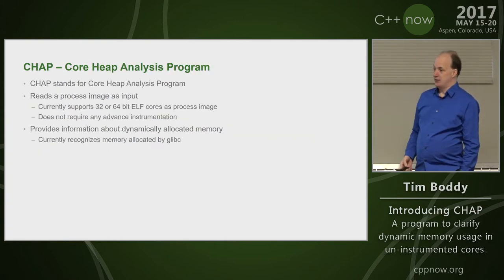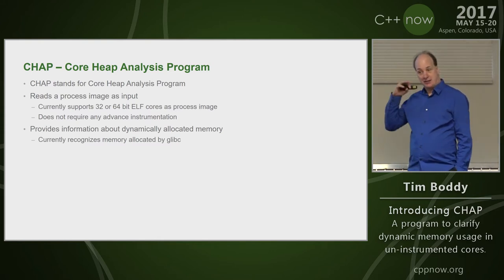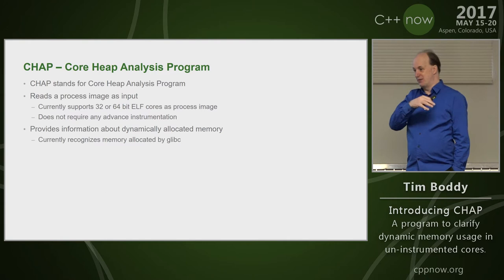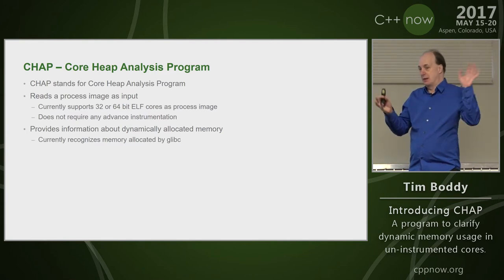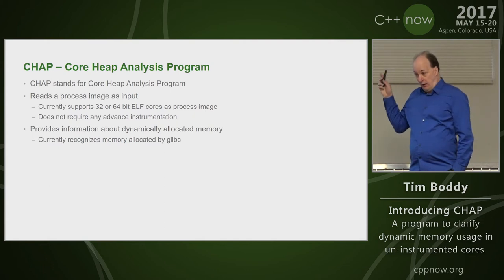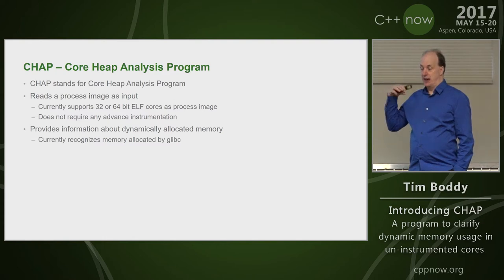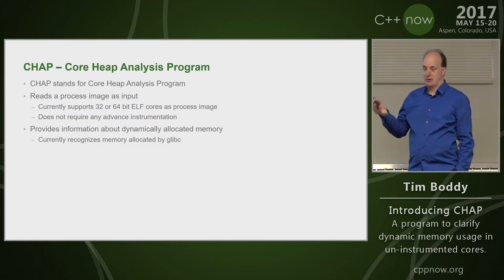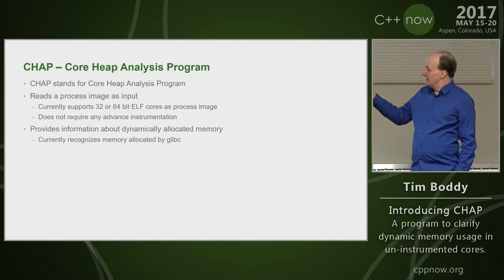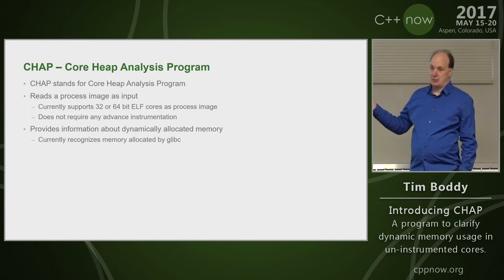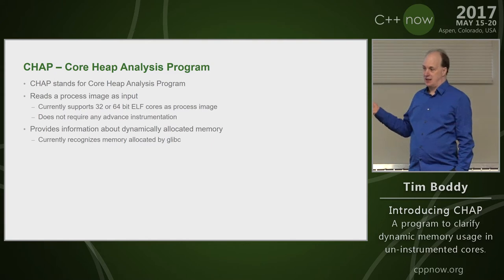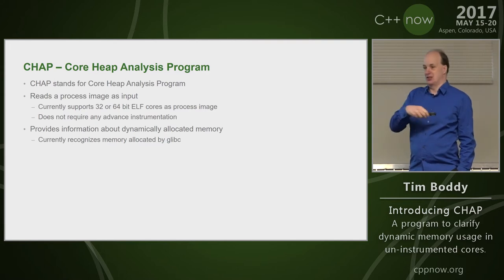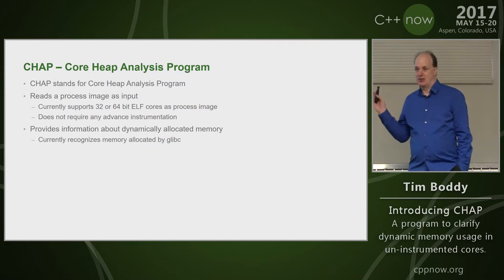CHAP stands for Core Heap Analysis Program. All it does is take a process image as input — using that in a very general sense. For this open-source version specifically, it reads an ELF core file, either 32-bit or 64-bit, in the same byte order. It's supposed to provide information about dynamically allocated memory. The caveat is that the only allocator supported right now is glibc malloc, as opposed to jemalloc, tcmalloc, or any local allocators.